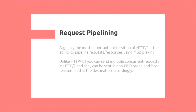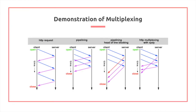What is pipelining of requests? Arguably the most important optimization of HTTP 2.0 is the ability to pipeline requests and responses using multiplexing. Unlike HTTP 1.1, you can send multiple concurrent requests in HTTP 2.0, and they can be sent in non-FIFO order, meaning a request doesn't necessarily have to be the first one to come back, and is later reassembled at the destination accordingly. This prevents head-of-line blocking — where in HTTP 1.1, if the first request is blocking because a resource can't be found, it blocks all subsequent requests. That is no longer the case with multiplexing.